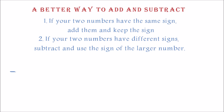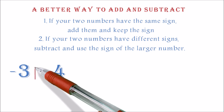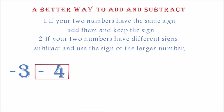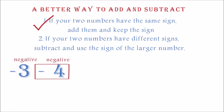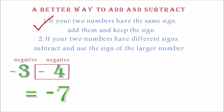Example one: negative three minus four. Please note that the middle operation is considered the sign of the second number. So the sign of the three is negative and the sign of the four is also negative. The rule is that if they have the same sign, you should add the two numbers and keep the sign. So we add three and four to get seven and we keep the negative. Final answer is negative seven.